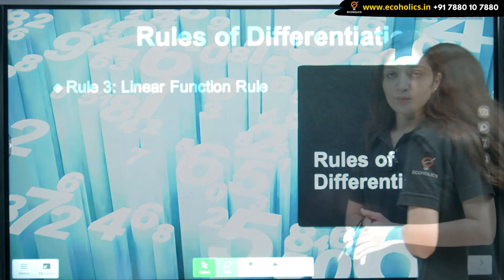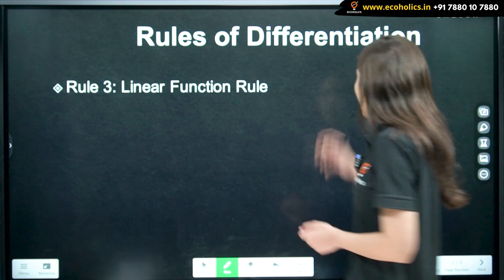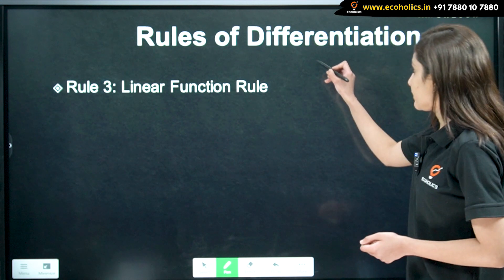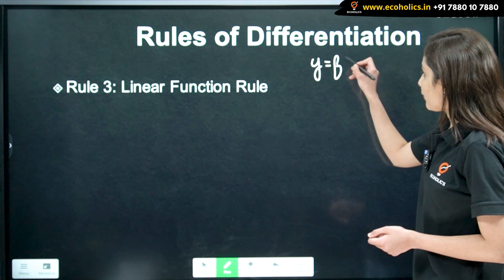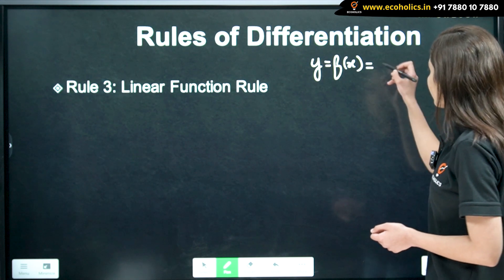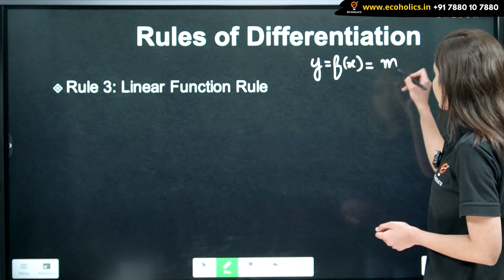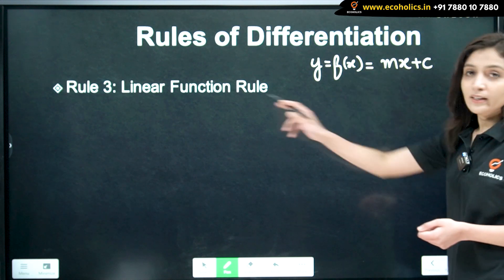So now, how do we represent a linear function? A linear function is represented as y is equal to f of x, that is equal to mx plus c. This is what is a linear function.